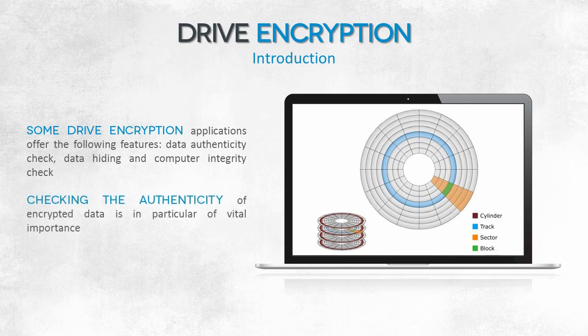An additional advantage of disk encryption could also be checking the integrity of the computer. This function is only available in BitLocker and is not available in TrueCrypt. Its idea is that interference in the computer — for example, moving the hard disk or a change in the order of the starting devices — causes automatic blocking of the encrypted disk.